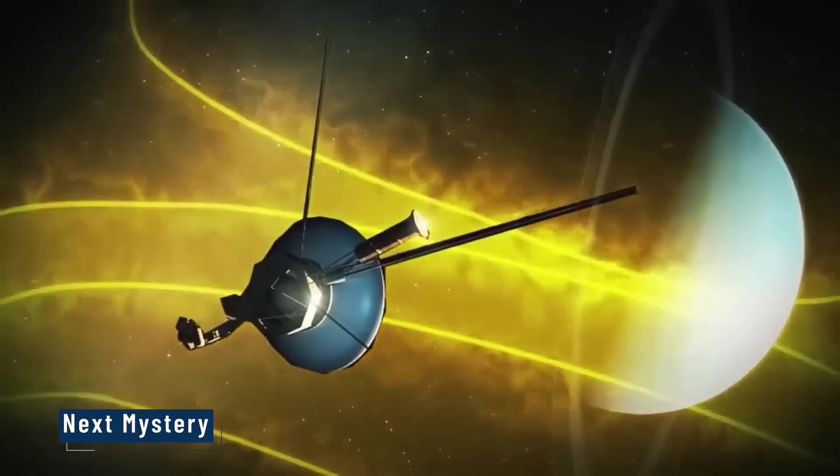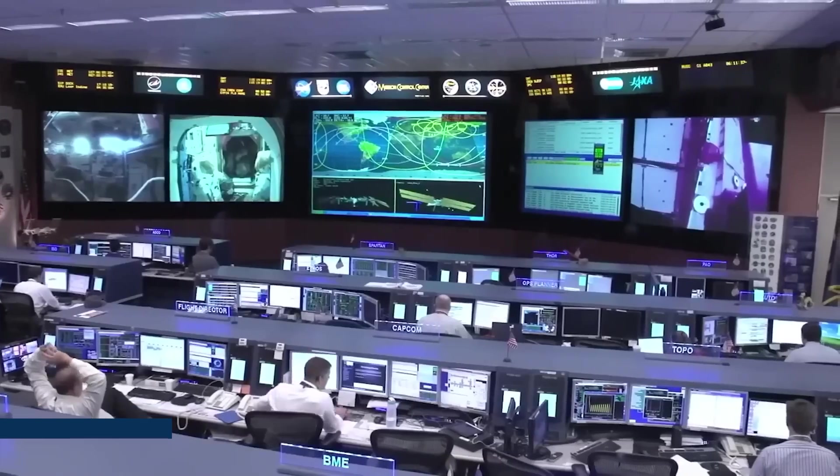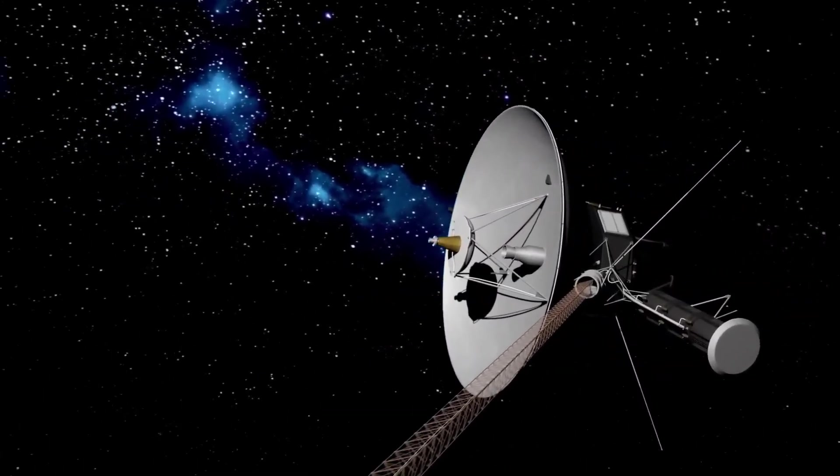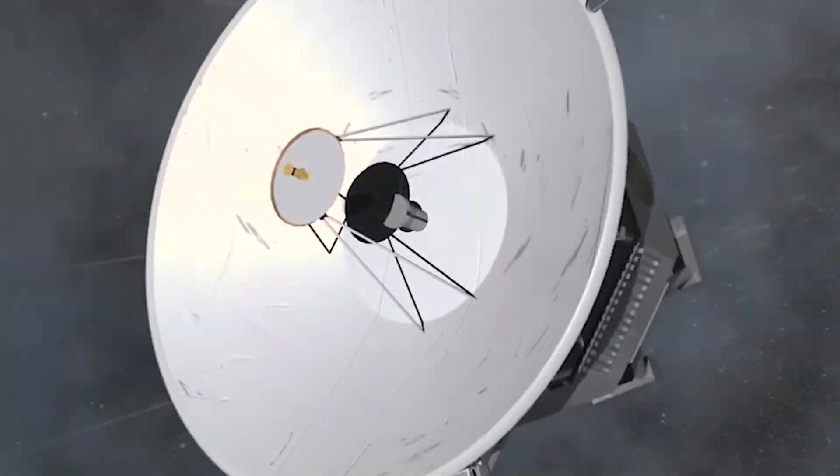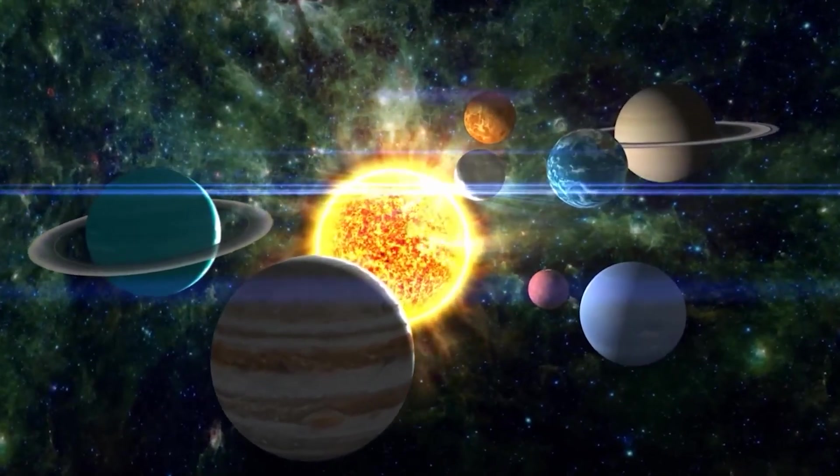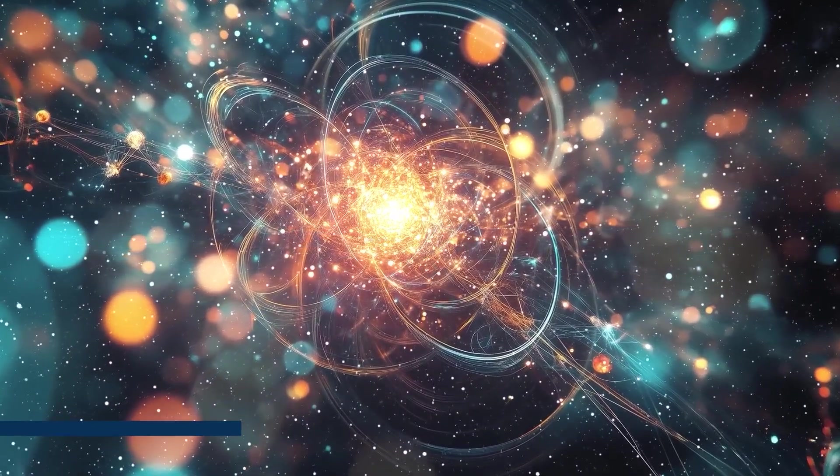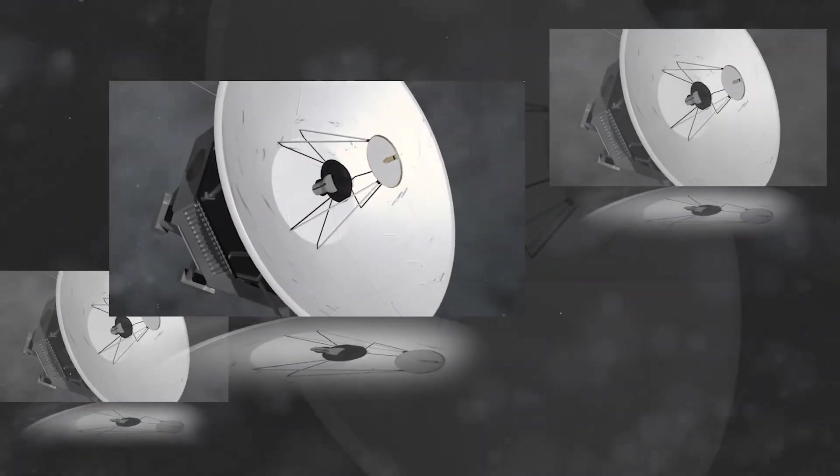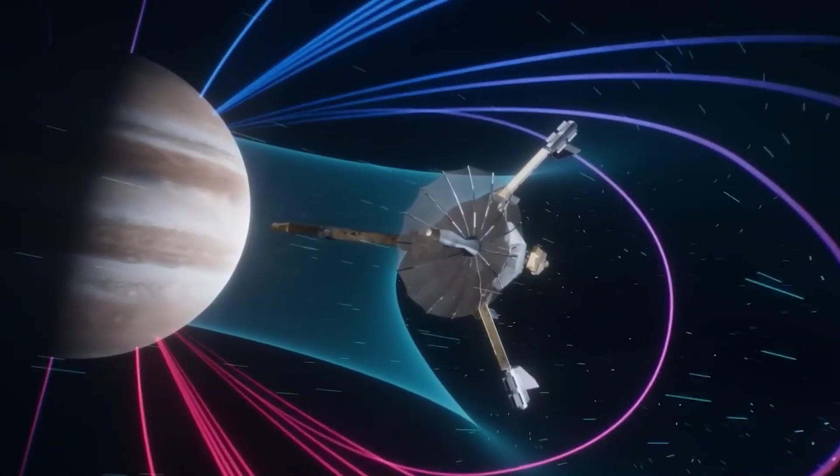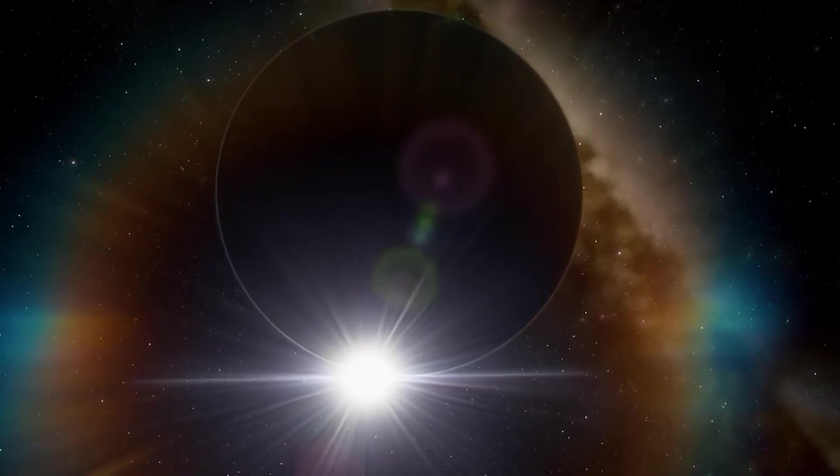And that whisper leads us to the next mystery. Because out there in that dark, buzzing void, Voyager is picking up something else, something even stranger. Twists in the magnetic field, pulses in radiation, patterns that suggest we might be near something unexpected. The shocking power of cosmic radiation. Once Voyager left the sun's protective bubble, it was fully exposed to the deep galaxy. And what's out there? Radiation. Not just any radiation, but galactic cosmic rays, particles that have been traveling for millions of years at nearly the speed of light. These aren't gentle particles, they're bullets. Tiny, invisible ones that rip through atoms and fry electronics.